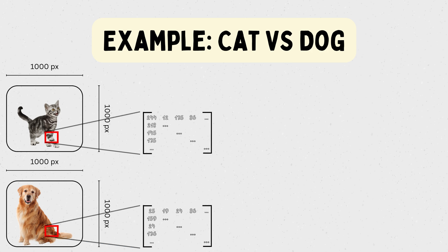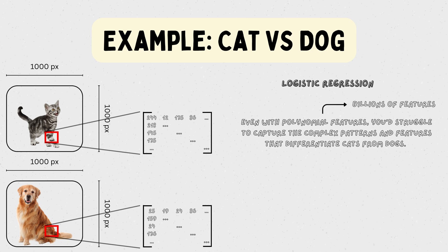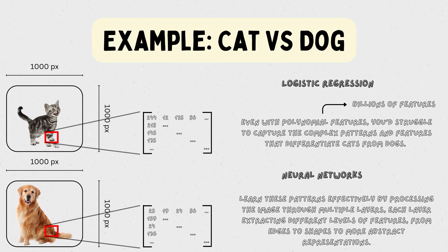With logistic regression, even with polynomial features, you'd struggle to capture the complex patterns and features that differentiate cats from dogs. However, a neural network can effectively learn these patterns by processing the image through multiple layers, each layer extracting different levels of features—from edges to shapes to more abstract representations.